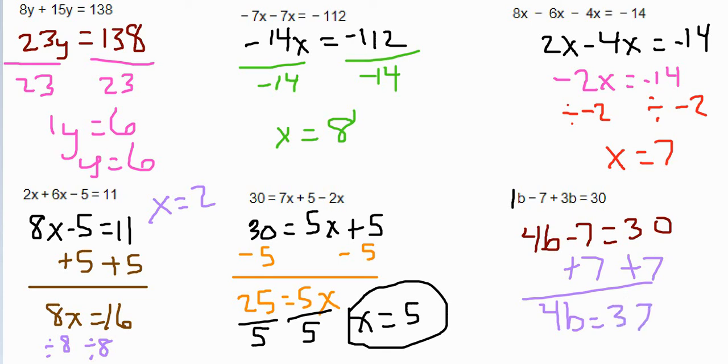Divide both sides by 4. And that would give us b equals 37 over 4 as your answer. And if you used your calculator, it may also give you the equivalent decimal, which would be 9.25.